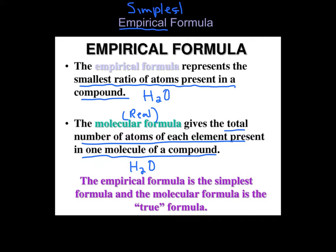But what if I had something like hydrogen peroxide? H2O2 is its molecular formula, but its empirical formula is the reduced version of that, the smallest ratio. So it is actually HO.